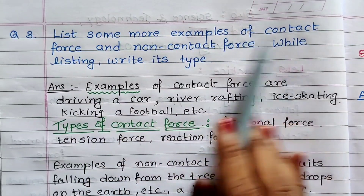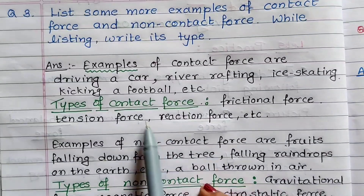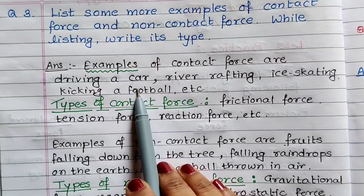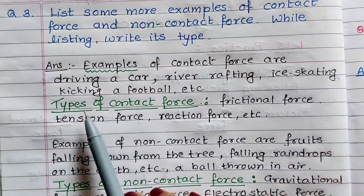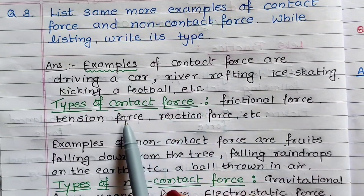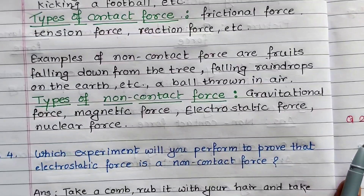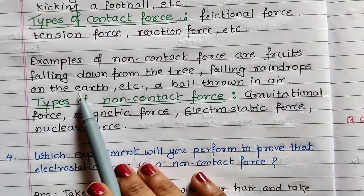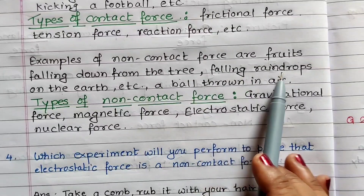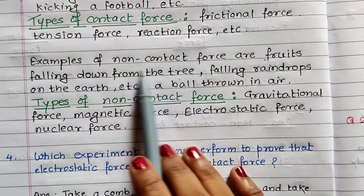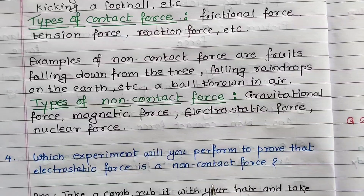Question 3: list some more examples of contact force and non-contact force, and write their types. Examples of contact force: driving a car, river rafting, ice skating, kicking a football — all are contact force. Types of contact force are frictional force, tension force, and reaction force. Examples of non-contact force: fruits falling from a tree, falling raindrops on the earth, a ball thrown in the air. Types of non-contact force are gravitational force, magnetic force, electrostatic force, and nuclear force.